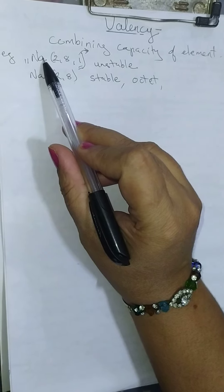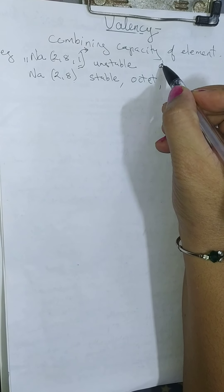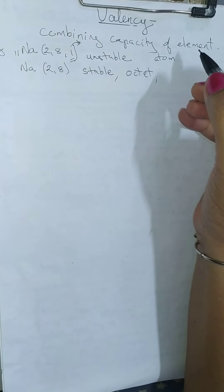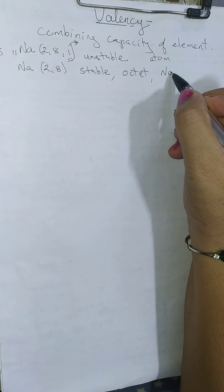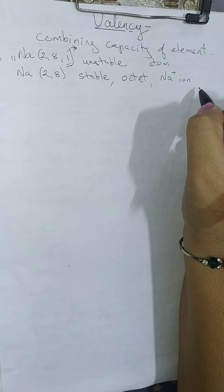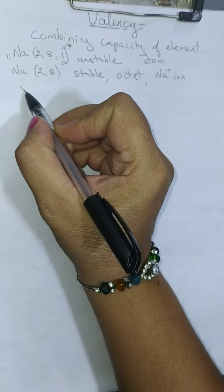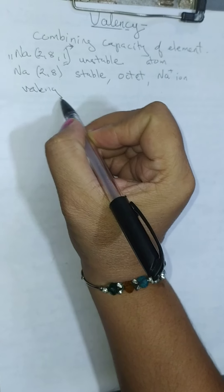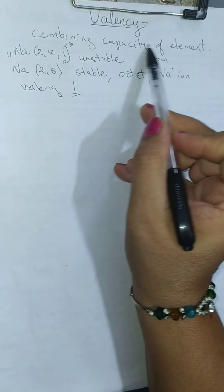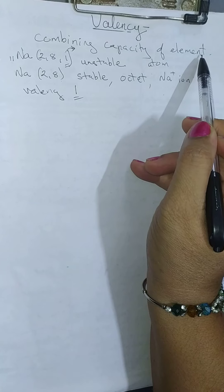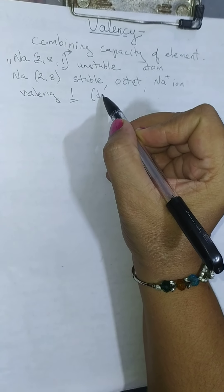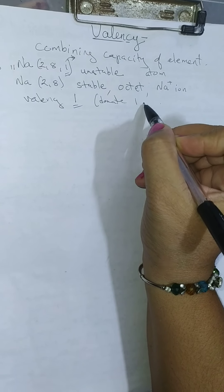First it was a sodium atom. When it has donated one electron, it has become a sodium ion. When it donates one electron, its valency is 1. Valency is the combining capacity of an element — its valency is 1 because it donates one electron.